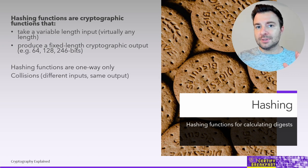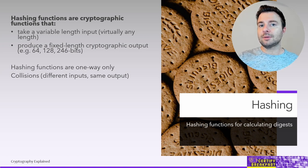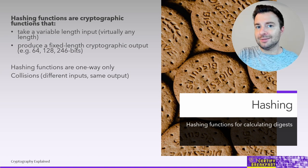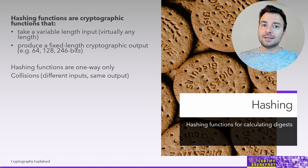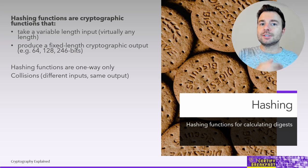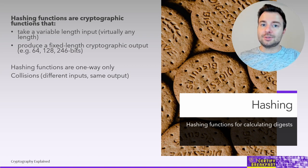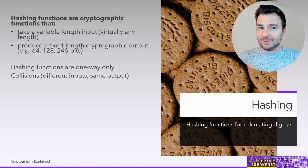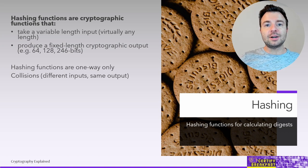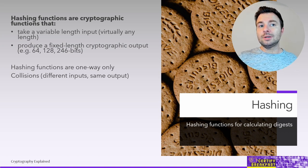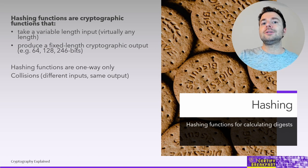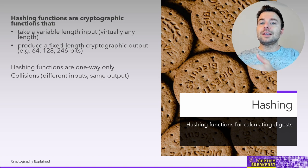There are situations where hashing functions can produce collisions. If a 10 GB file as input can produce 64 bits of output, there are obviously more possible inputs than possible results in those 64 bits of output. This means multiple inputs can potentially cause the same output — called a hashing collision. These are not desirable because it's a way to break integrity, meaning we can't be 100% certain that any change to the input will generate a different hash output.